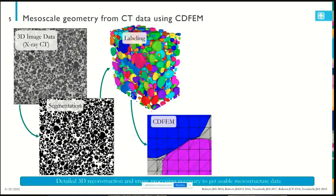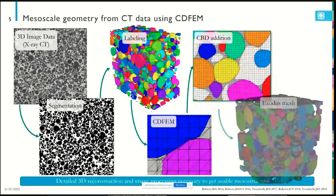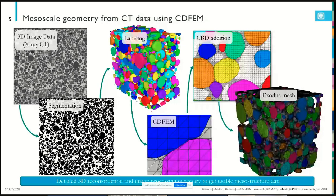We have an in-house algorithm known as the conformal decomposition finite element method — a robust automatic way to create very large-scale finite element meshes directly from image data. We often run 300 to 400 million element simulations, generating these meshes in minutes rather than hours. We then add the CBD phase synthetically and generate a highly resolved finite element mesh of a large-scale domain — about 100 microns on each side — including particles, CBD phase, and electrolyte.